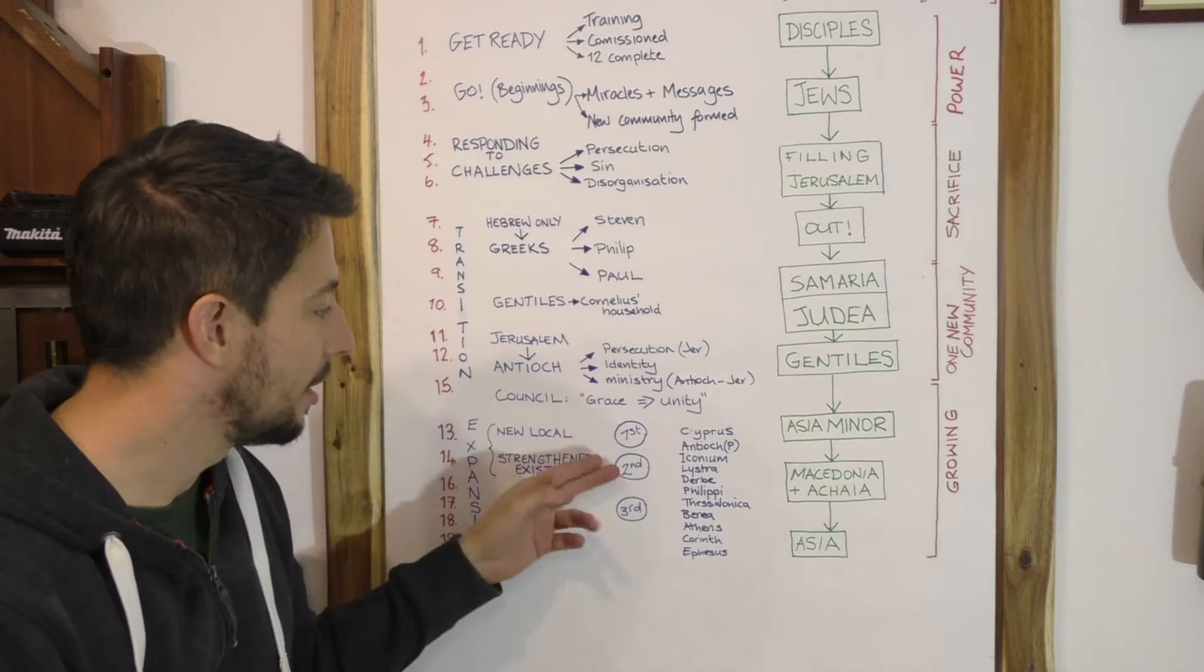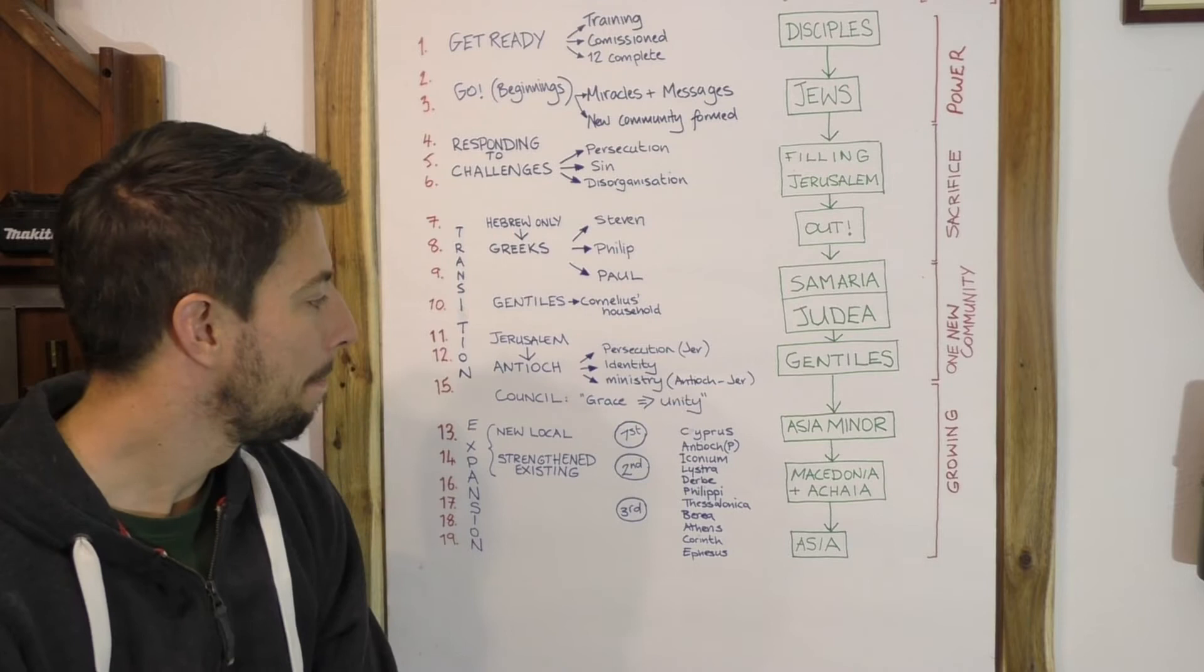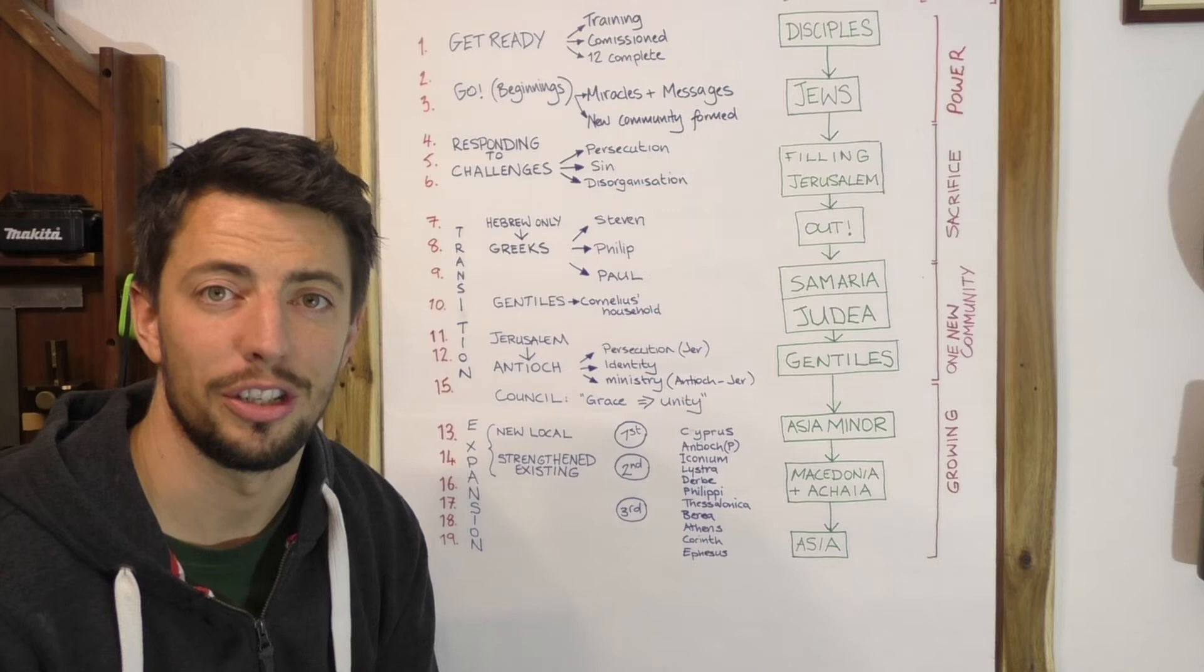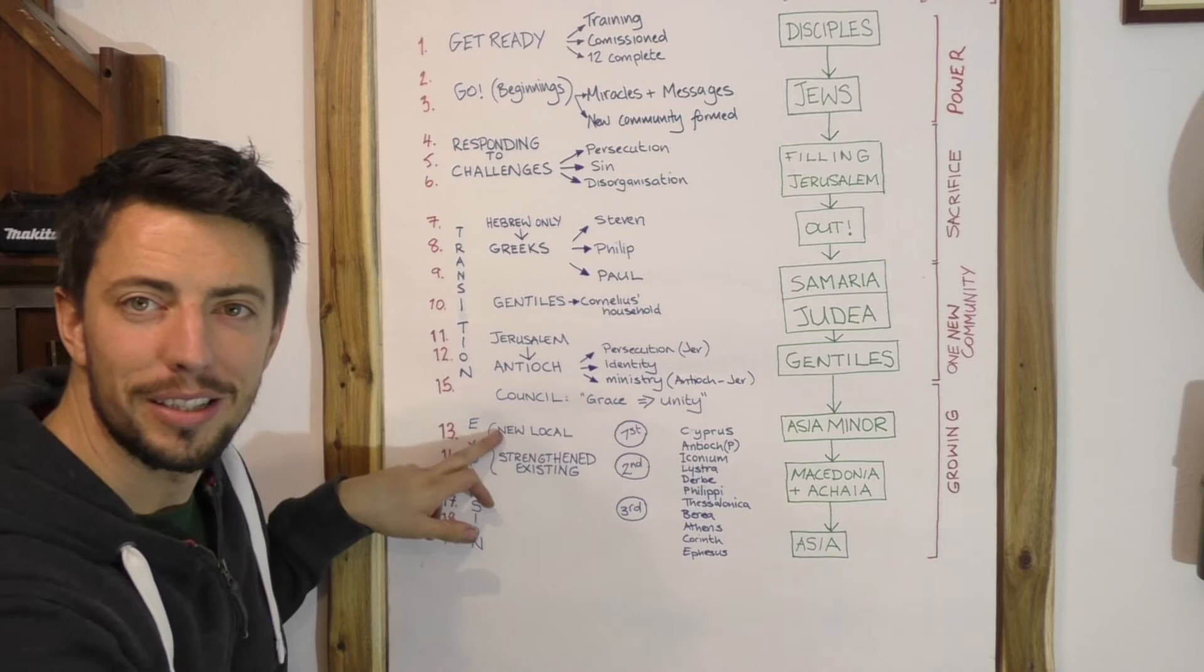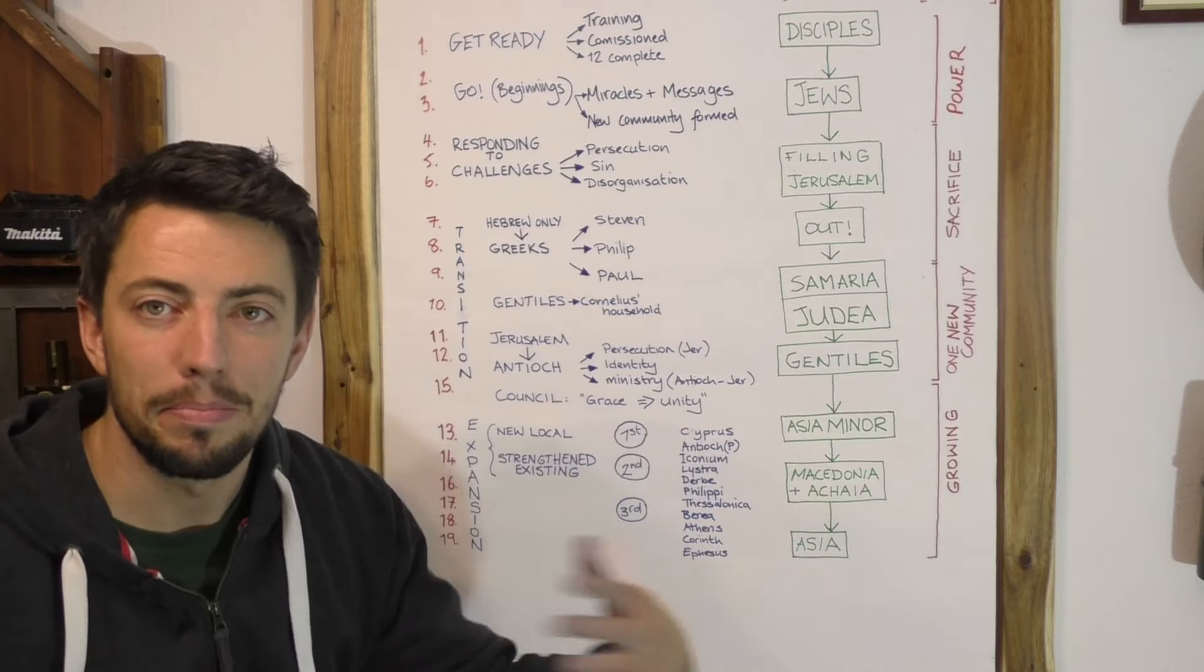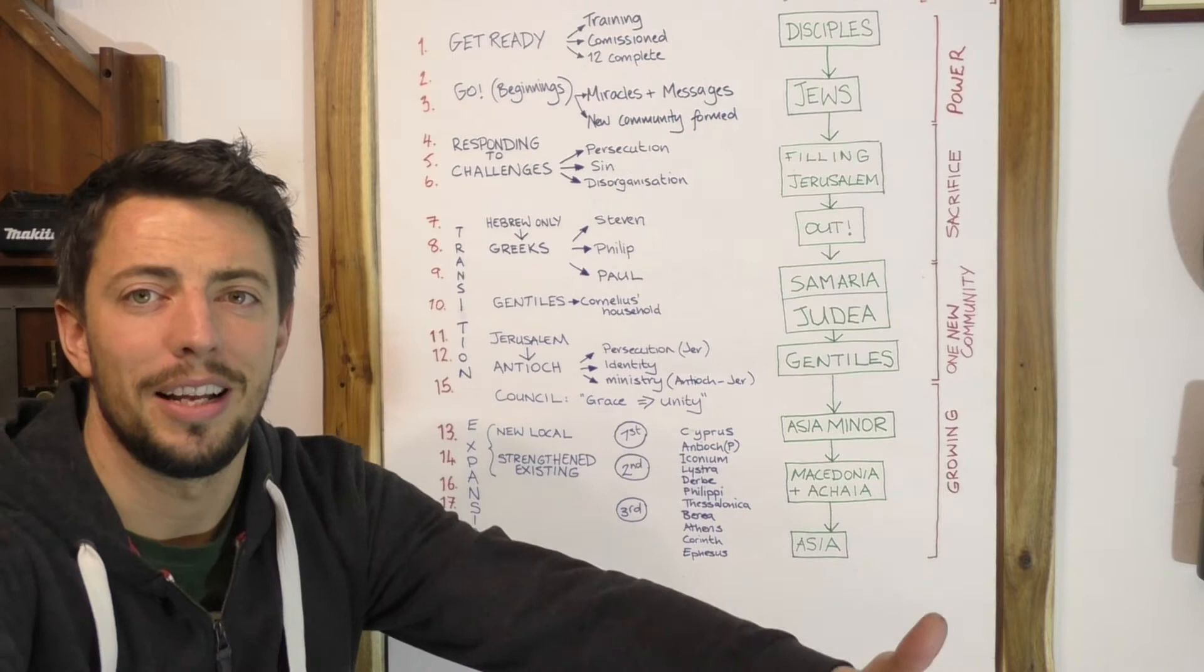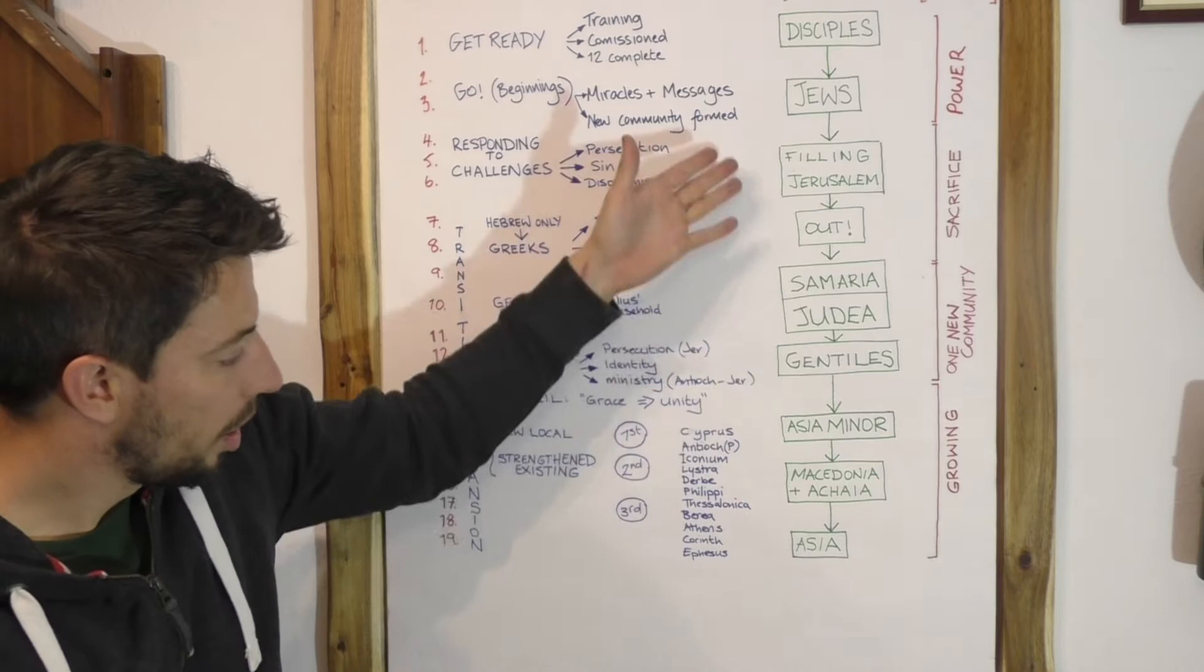They will move down through the cities. In the first journey they will get to Derbe and they will return, and then they will begin a second journey where they head into a new area, a new province of the Roman Empire. But they will cover also the cities from the previous journey, they will strengthen the churches that are there.